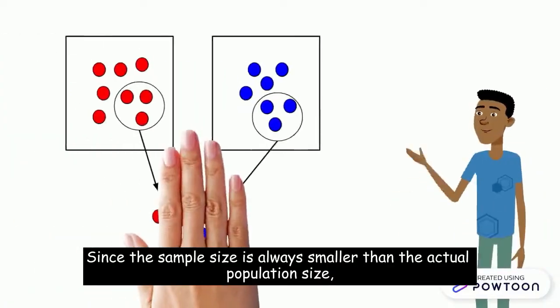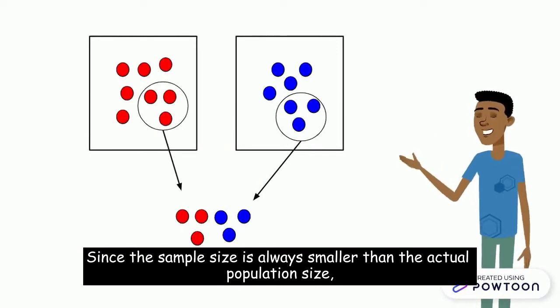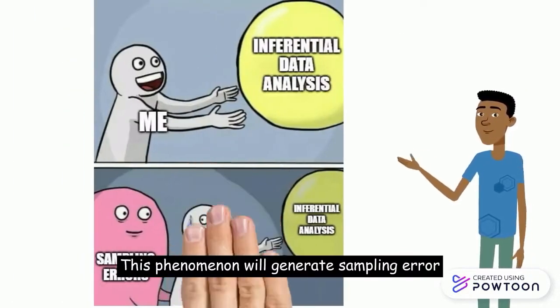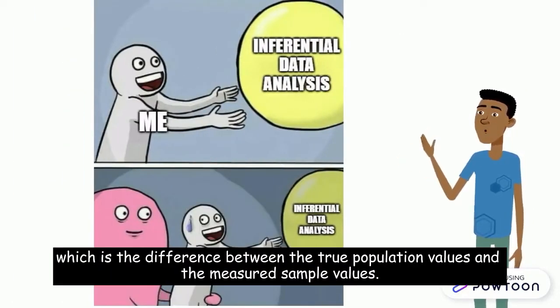Since the sample size is always smaller than the actual population size, it goes without saying that some of the population is not recorded in the sample data. This phenomenon will generate sampling error, which is the difference between the true population values and the measured sample values.